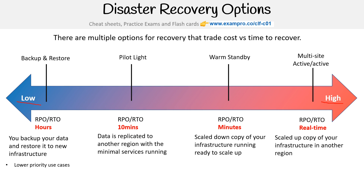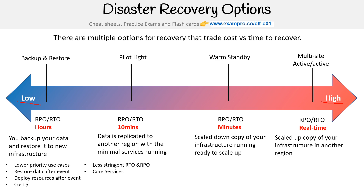For backup and restore, this is for low-priority use cases — you restore data after events, deploy resources after an event, and it's very cost effective. For pilot light, you have less stringent RTOs and RPOs. You're running only your core services, you start and scale resources after the event, and this is a little bit more expensive.